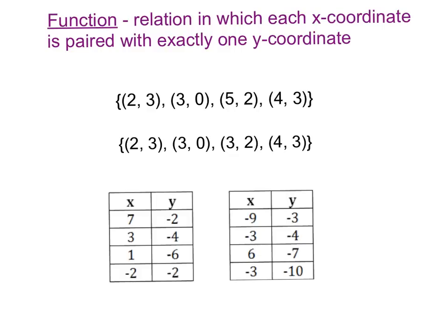Let's look at some examples. In this first example, if my input is 2, I know that my output is 3. If my input is 3, I know that my output is 0. If my input is 5, I know that my output is 2. And if my input is 4, I know that my output is 3. Therefore, this is a function, because each x-coordinate goes to a unique y-coordinate.